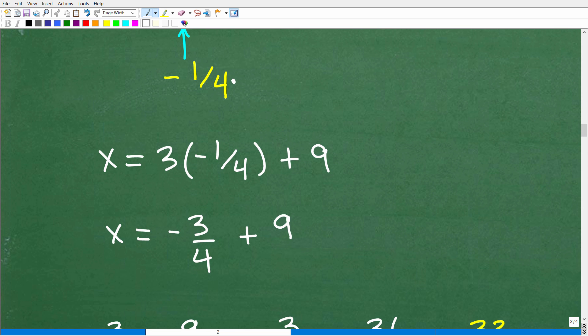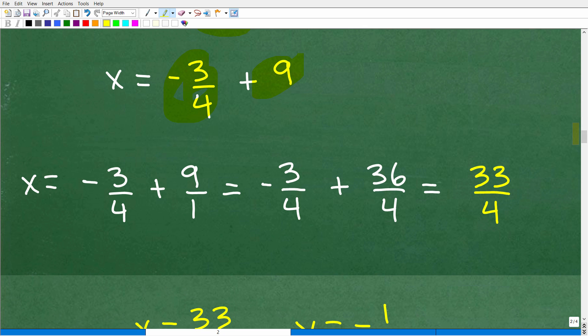So let's do that right here. So negative 1 fourth, we're going to plug in where y is at. So 3 times negative 1 fourth plus 9. x is equal to negative 3 fourths plus 9. And of course, to be successful in algebra, you must be successful in working with fractions. So x is equal to negative 3 fourths plus 9 or 9 over 1. And you can see here the LCD is 4. So I'm going to change this fraction where the denominator is 4 by multiplying the numerator and denominator by 4. So we have 36 over 4, negative 3 fourths plus 36 over 4. There you go. 33 over 4.